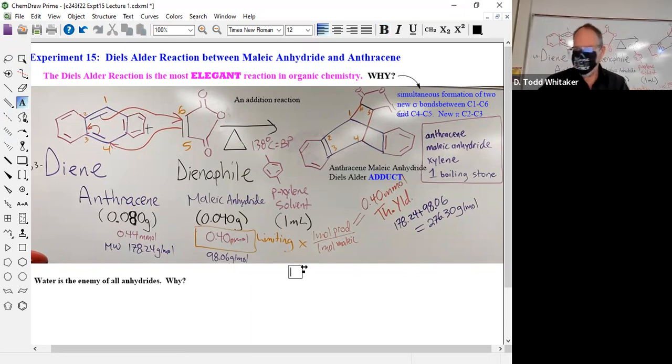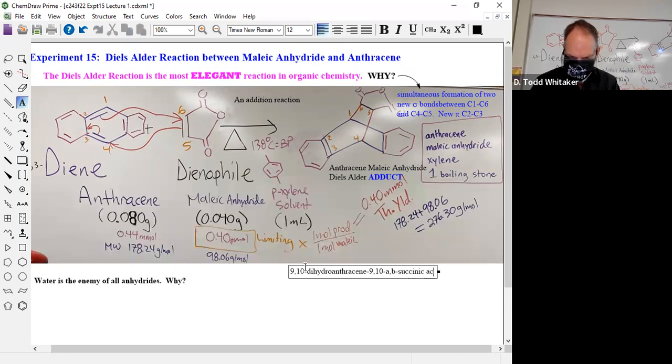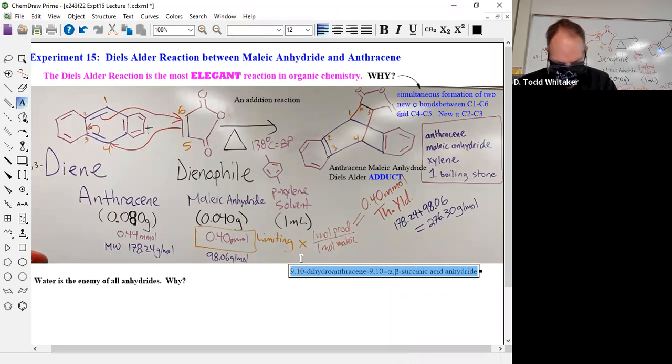And your book doesn't call it this thing. Somebody say the name of the product so I can type it. It's in the title of the experiment if you want to know: 9,10-dihydroanthracene. That means anthracene has two extra hydrogens compared to normal anthracene. 9,10, so carbons 9 and 10 also have the succinic acid—sorry—alpha, beta. Alpha, beta, no primes or anything. Alpha beta here. And that's the symbol font. That's a longish name, isn't it?